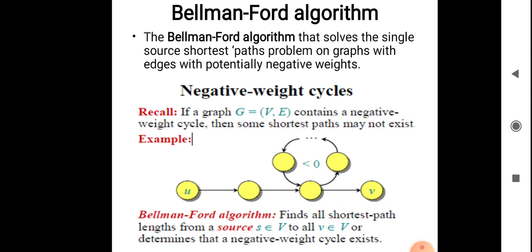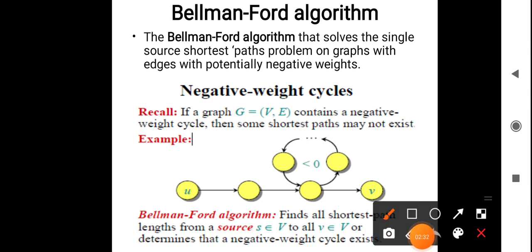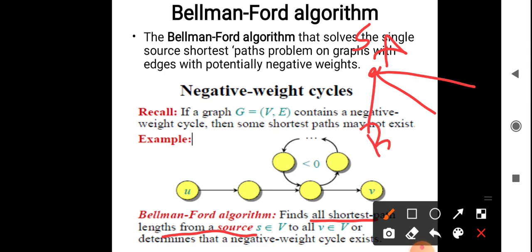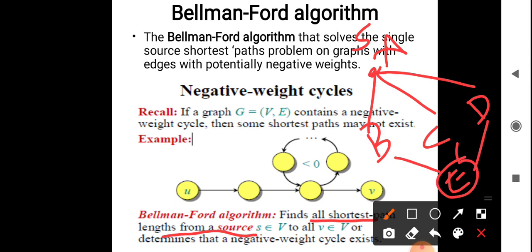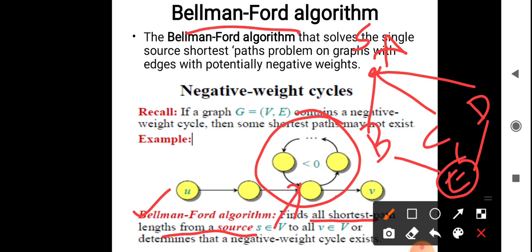Bellman-Ford algorithm is mainly used to find all shortest paths from a source vertex to all other vertices. For example, from source vertex A, we can find the shortest path to B, C, D, or E. Additionally, Bellman-Ford can detect the existence of a negative weight cycle in the graph.